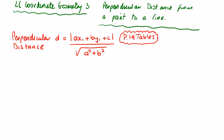The basic formula is: the perpendicular distance d is equal to ax₁ plus by₁ plus c, over the square root of a squared plus b squared. This is when the equation of a line is written in the form ax plus by plus c equals 0, where a is the coefficient of x, b is the coefficient of y, and c is the constant at the end.